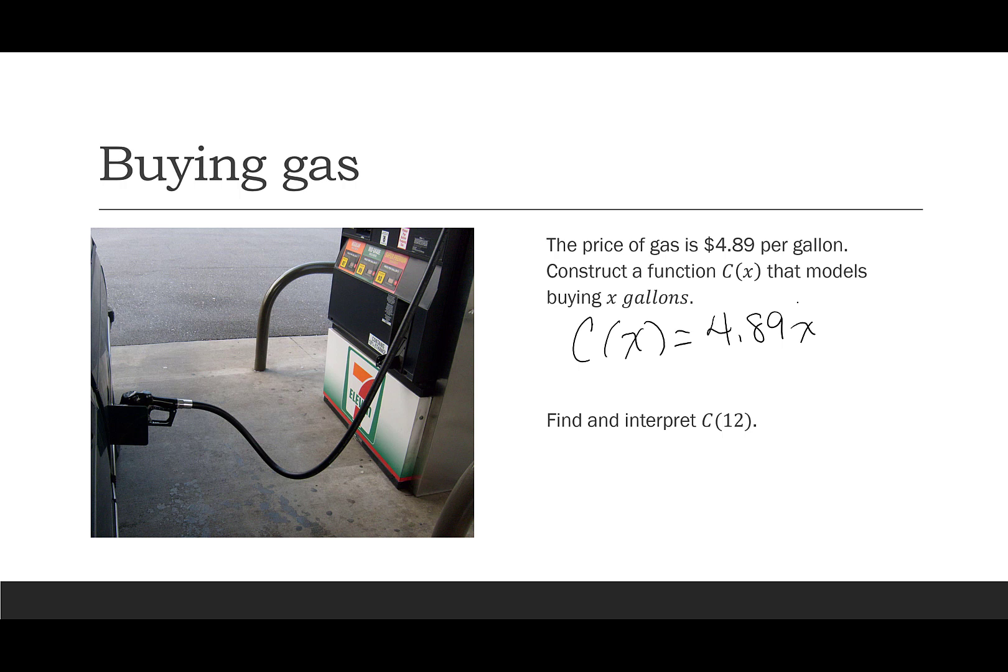The next part we are going to find and interpret c(12). So c(12) will be 4.89 times 12, which is 58.68. The interpretation is 12 gallons of gas will cost $58.68.